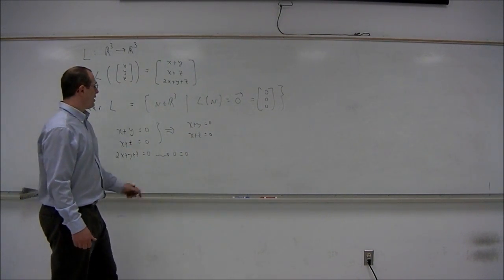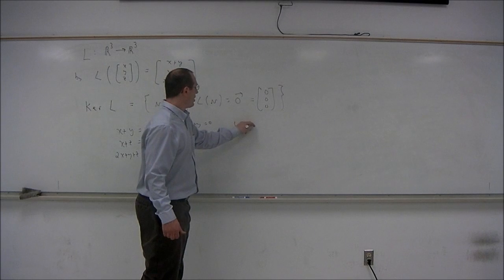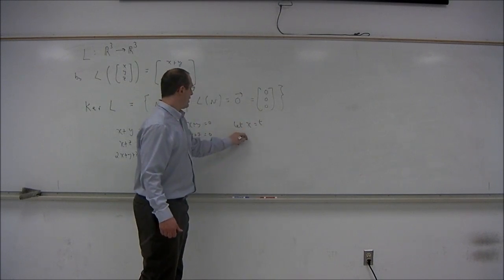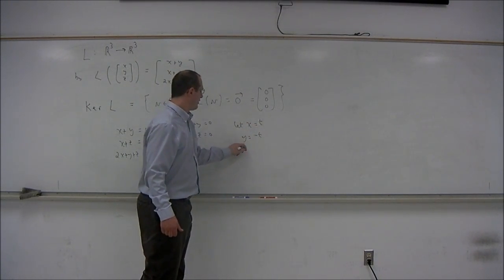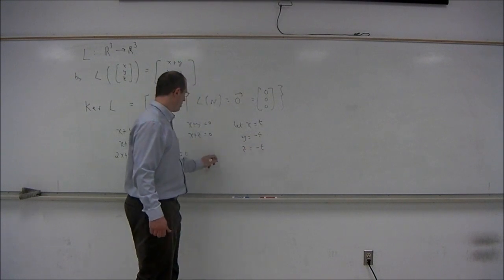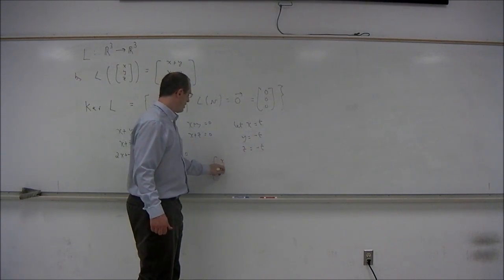In this system, if we let x equal any number t, then y is equal to its negative, and so is z. So a solution to the system is (x,y,